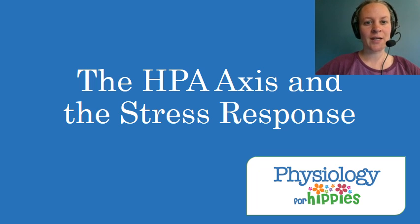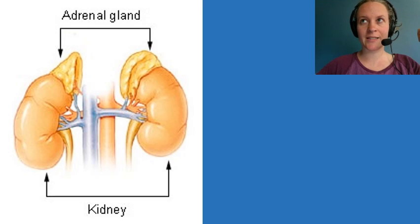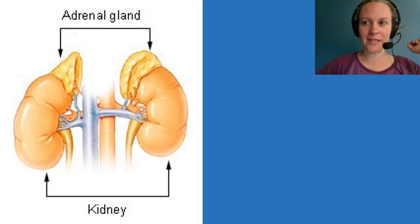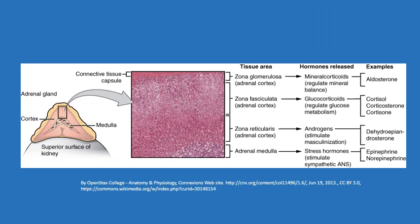The HPA stands for hypothalamic, pituitary, and adrenal axis. If we're going to talk about the adrenal glands as they relate to the stress response, we need to make sure we're all on the same page with where they are. As a reminder, the adrenal glands sit on top of the kidneys — I like to think of them as little Santa Claus hats sitting there. One key point about the adrenal gland is that it's actually like two endocrine glands wrapped into one.